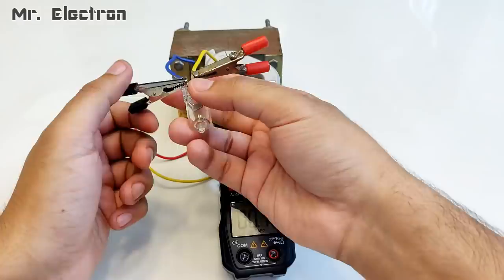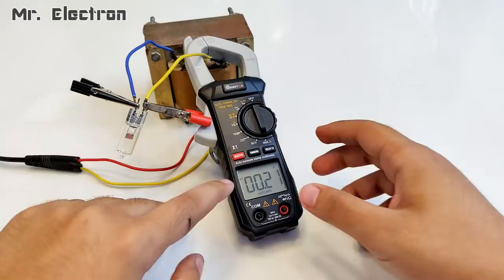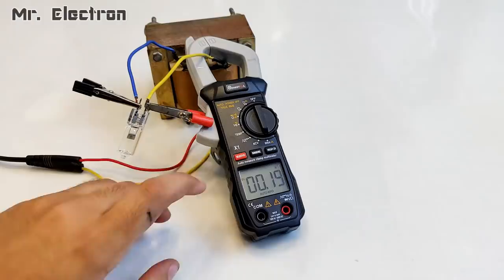Now it's time to connect the bulb. Carefully, not to create any short circuit, because the current output of this transformer is very high. Oh, actually I have to change it from DC to AC mode.